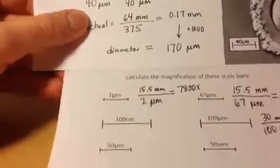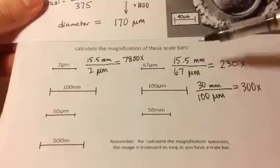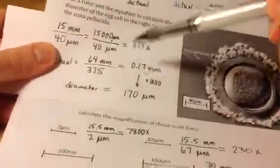So, that's how to do that. Now, for this one, this is calculating the magnification of a scale bar. So, it's basically just like the first part of this previous problem.